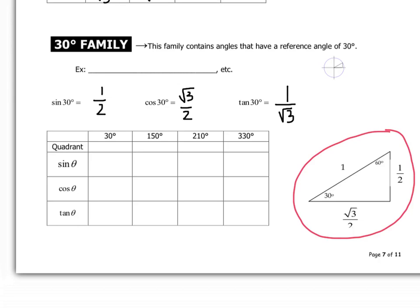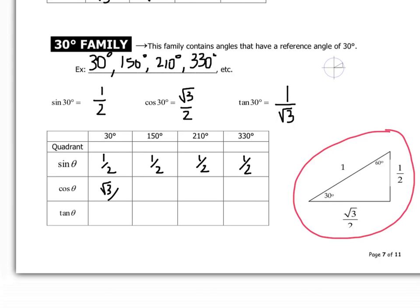What are the angles in this family? 30 degrees is in this family. In quadrant 2, 150. In quadrant 3, 210. And in quadrant 4, 330. The sine, cosine, and tangent values will again remain the same without reference to the sign of the values, and the positive/negative pattern is the same as we saw above.